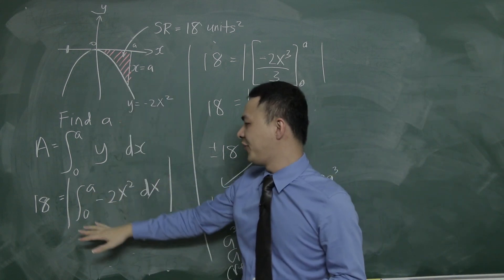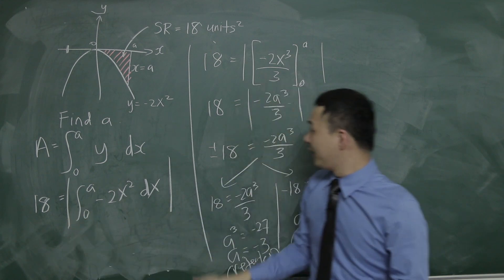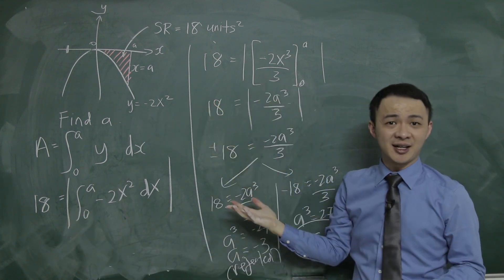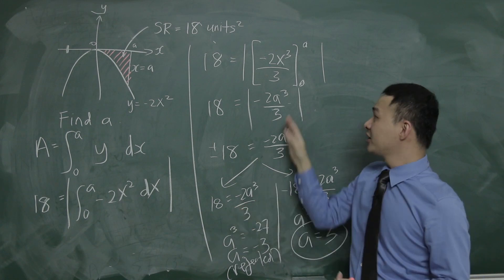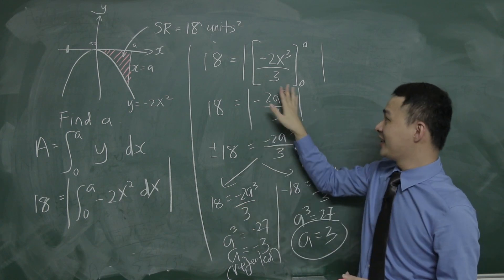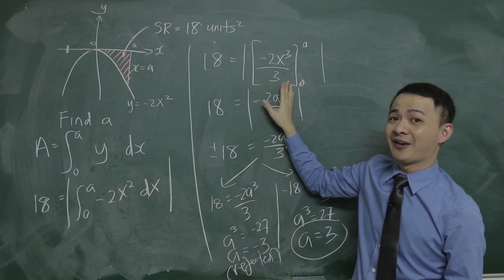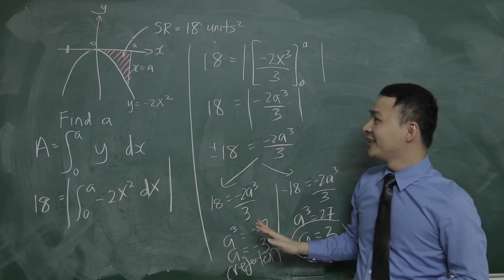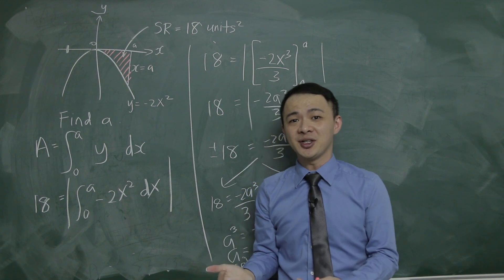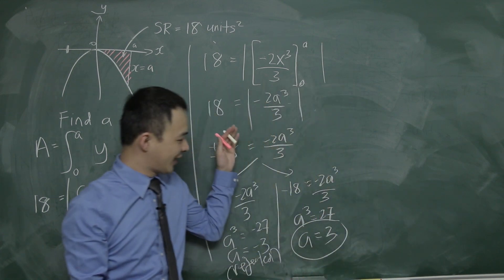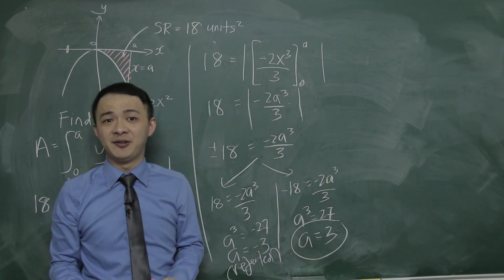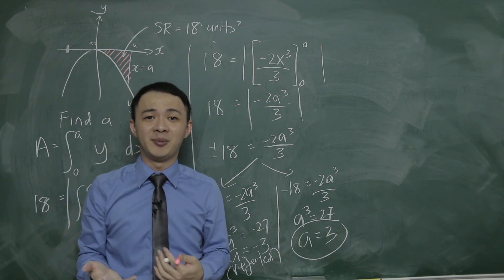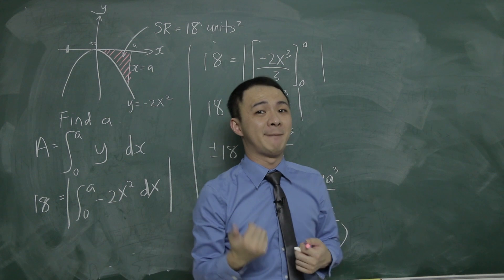The student was probably confused about the modulus part. When I expand the modulus, I add plus or minus on the other side because here we have an unknown. If it were just a number like negative 2, I'd simplify straight to positive 2 without the plus or minus. That's how we do these integration questions — I hope the working here helps you understand. If you're confused, post a comment below.